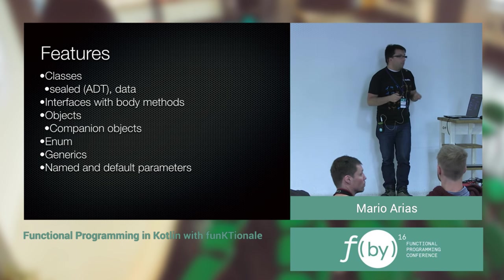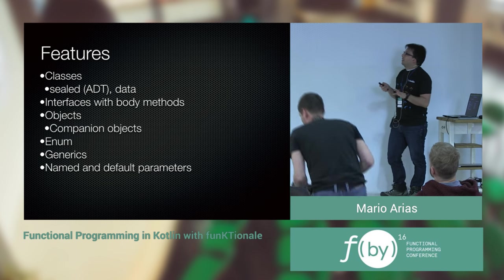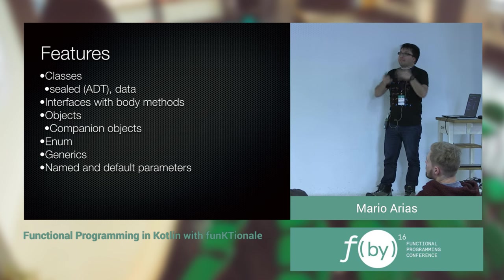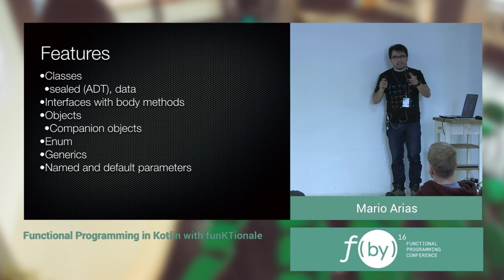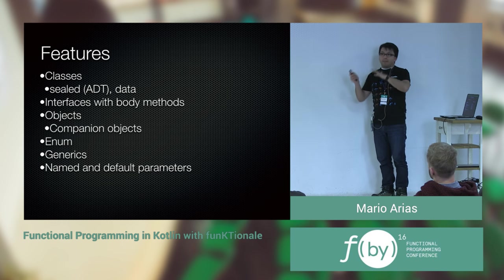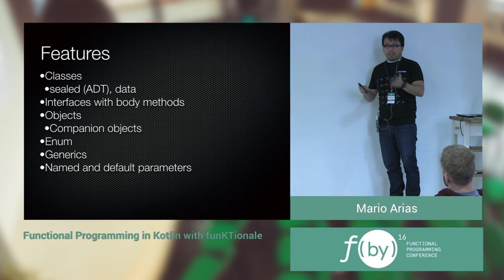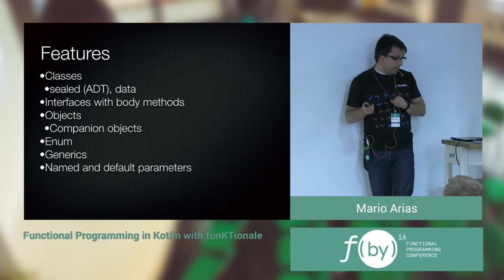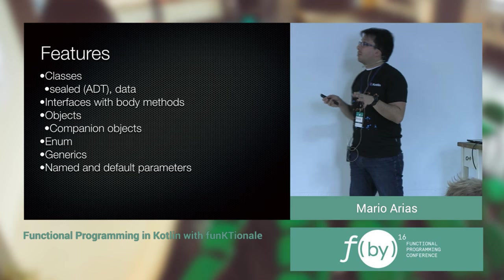What features does Kotlin have? It has classes, sealed classes so you can develop ADTs, and data classes that are like case classes in Scala. It has interfaces with default methods like Java 8 — not a full trait like Scala. You have objects, including companion objects as in Scala, enumerations, and generics with covariance and contravariance.